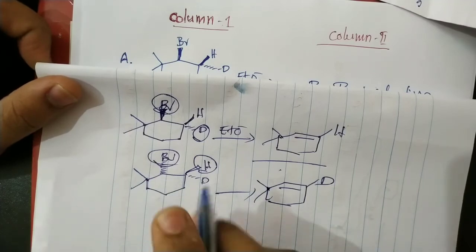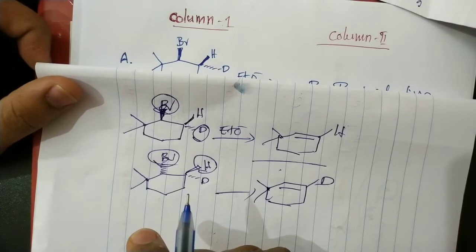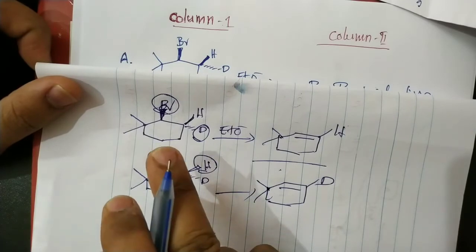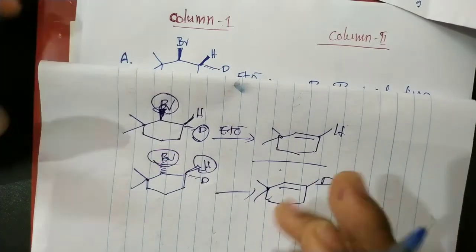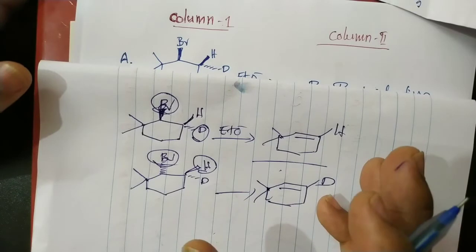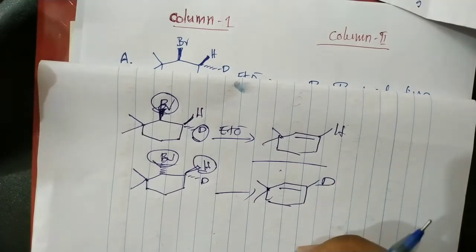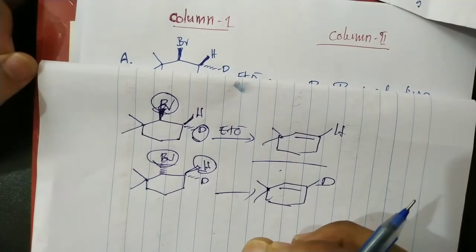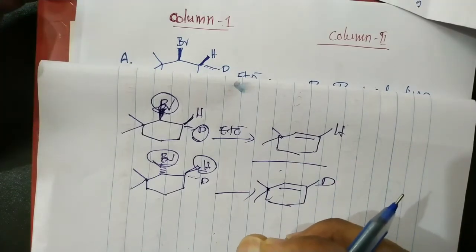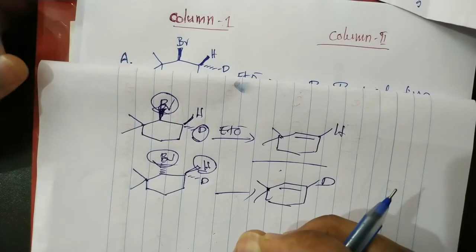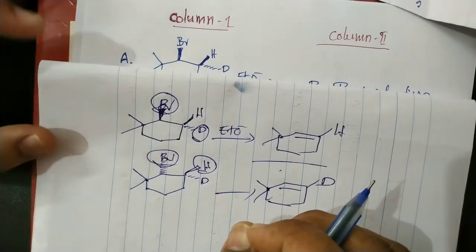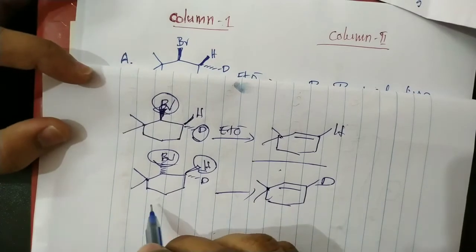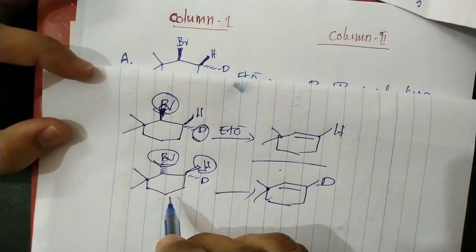It is stereospecific because the product formation depends on the stereochemistry of the reactant. Different stereoisomers give different products. For a specific stereoisomer, the product formation is specific for that reactant. So it is a stereospecific reaction.